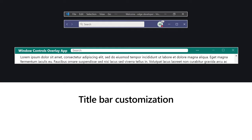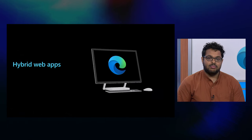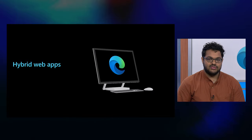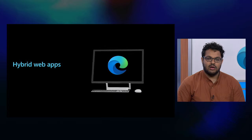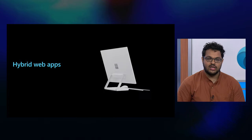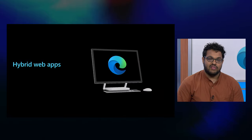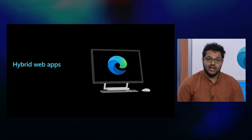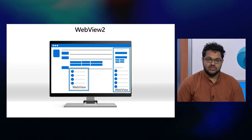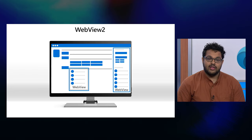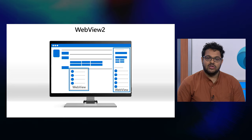PWAs are a great way to build and distribute an application if web standards meet all of the requirements for your apps. But we also know some developers want to build hybrid applications — apps that mix web and native technology. Maybe you want to access capabilities that aren't available on the web yet, or maybe you have an existing native app that you want to modernize. To support these use cases, we've introduced WebView2, which allows you to take the Edge web platform and embed it in your native application. WebView2 can be used to draw the UI for your entire app, or just to embed a small control that lives side-by-side with your native UI.